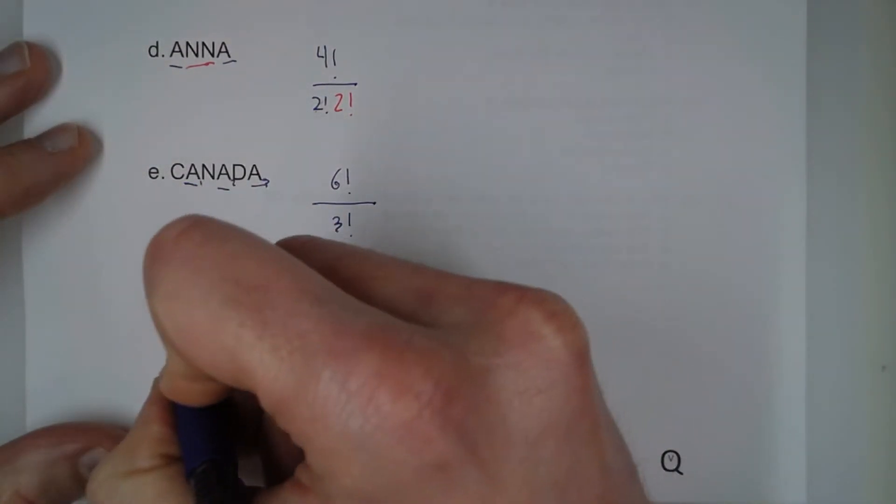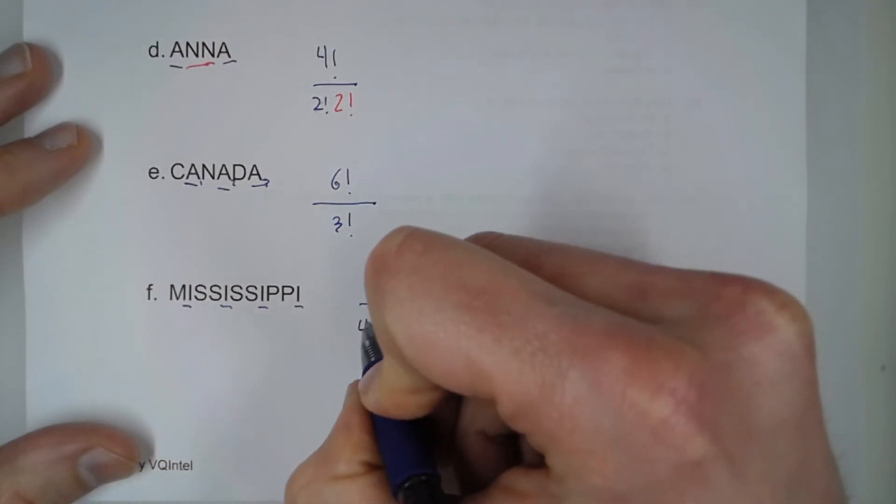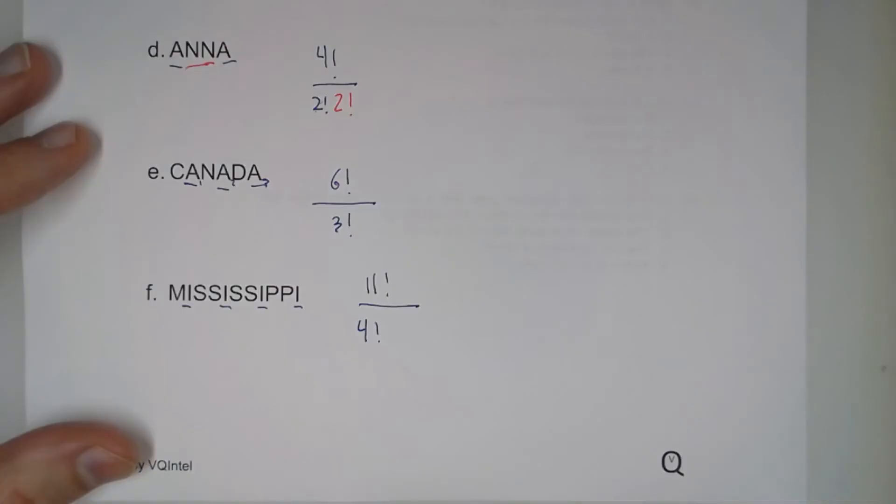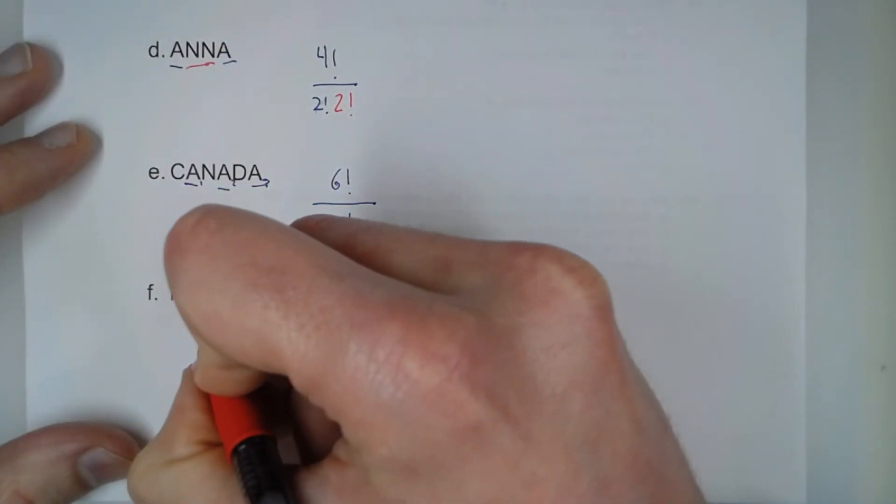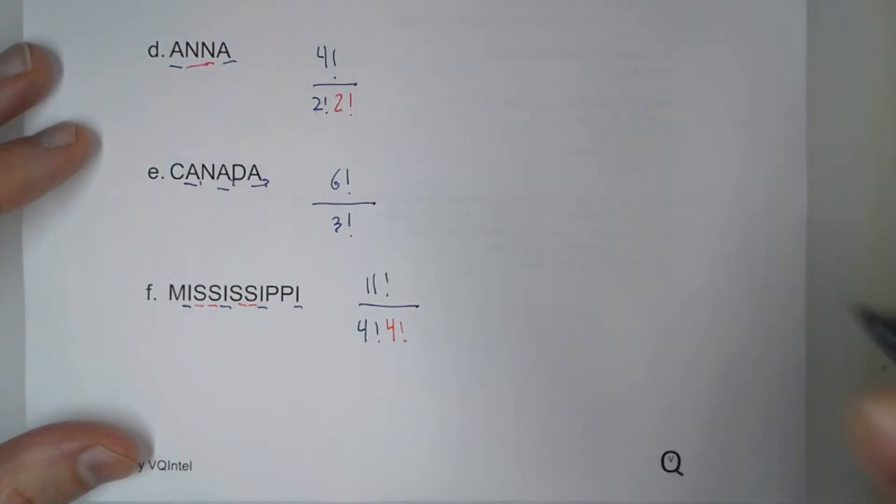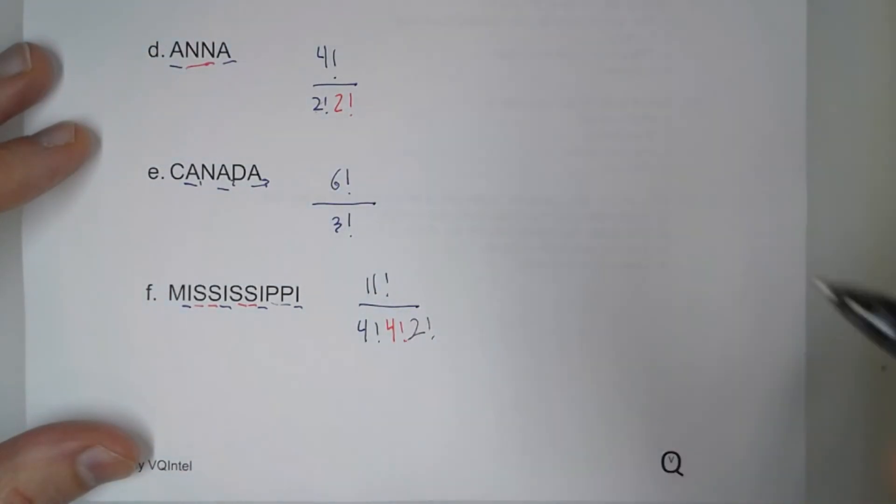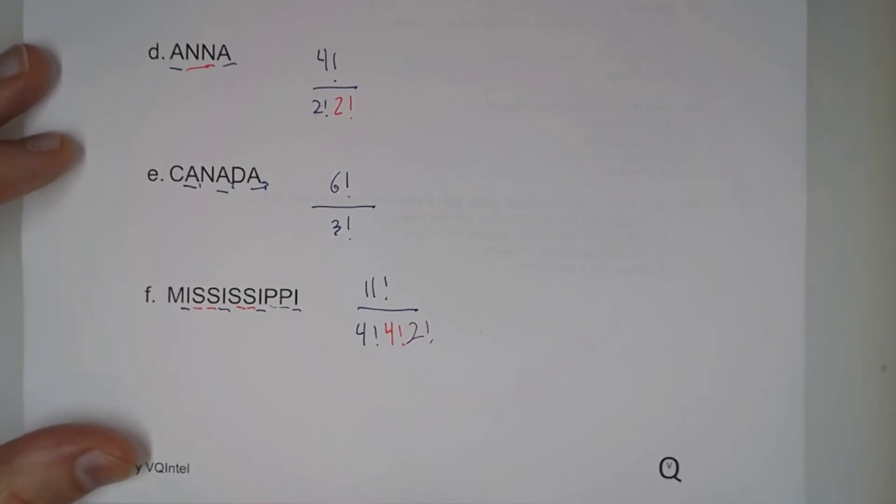Now, we have quite a few repeat letters. Let's see, one, two, three, four I's. So we're going to divide by four factorial for the I's. One, two, three, four S's. So we're going to divide by four factorial for the S's. And we have two P's. So we're also going to divide by two factorial for the P's.